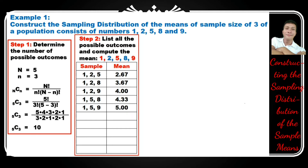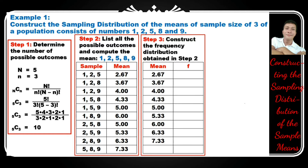Continuing with the remaining samples: 1-5-9 whose mean is 5, 1-8-9 whose mean is 6, 2-5-8 whose mean is 5, 2-5-9 whose mean is 5.33, 2-8-9 whose mean is 6.33, and 5-8-9 whose mean is 7.33.